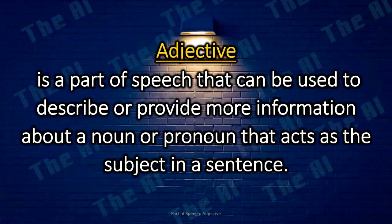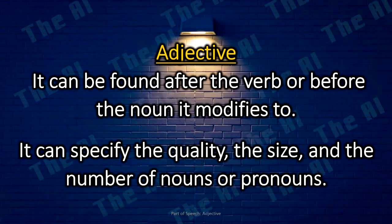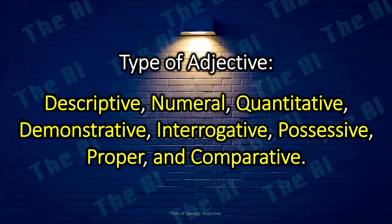Adjective. An adjective is a part of speech that can be used to describe or provide more information about a noun or pronoun that acts as the subject in a sentence. Adjectives can be found after the verb or before the noun they modify, and can specify the quality, size, and number of nouns or pronouns. Types of adjectives include: descriptive, numeral, quantitative, demonstrative, interrogative, possessive, proper, and comparative.